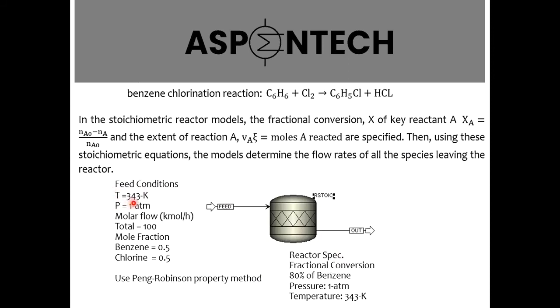The feed conditions given to us are: temperature of the feed is 343 Kelvin, pressure 1 atm, molar flow rate 100 kmol per hour, equimolar feed of benzene and chlorine. Use Peng-Robinson property package. In the reactor specification, the temperature and pressure are the same as that of the feed with 80% conversion of benzene.